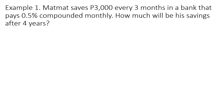Example 1. MatMath saves 3,000 pesos every 3 months in a bank that pays 0.5% compounded monthly. How much will be his savings after 4 years? Notice that the interval of savings is every 3 months or quarterly, which equals 4, and the interest period is monthly, which is 12. Since the interval of the savings and the interest period are different from each other, this problem involves general annuity and not simple annuity.